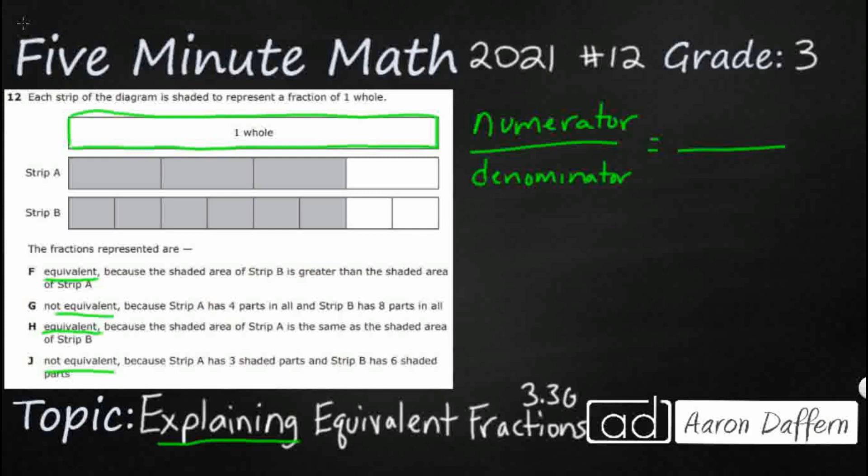So our denominator is always going to be our total number of pieces, or total number of slices, total number of squares, just the total, whatever it is, because fractions look differently.